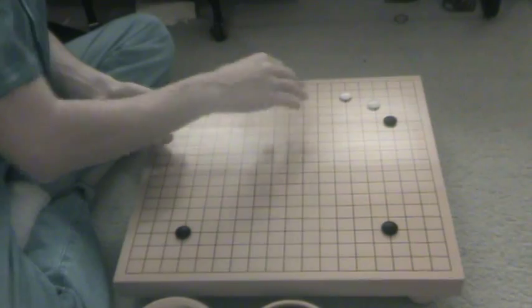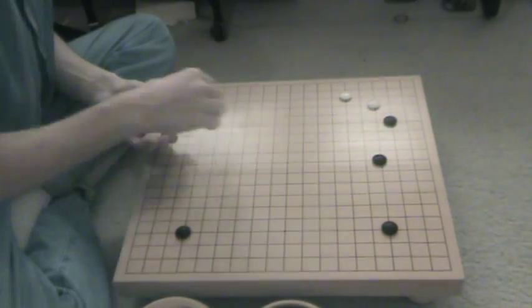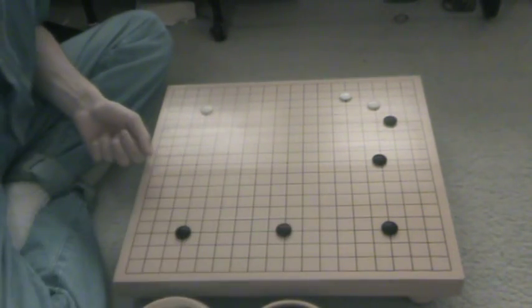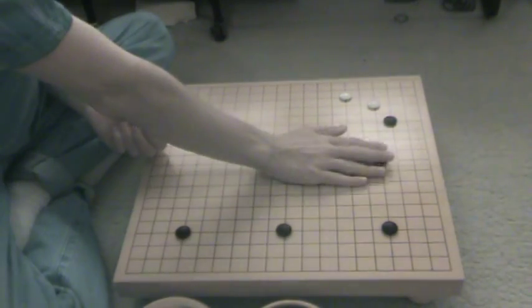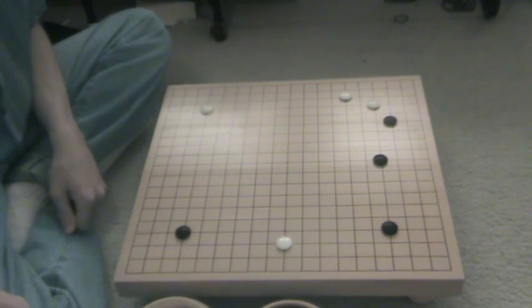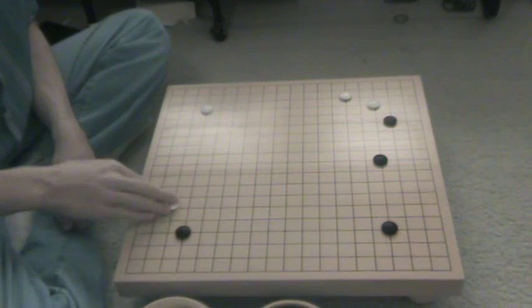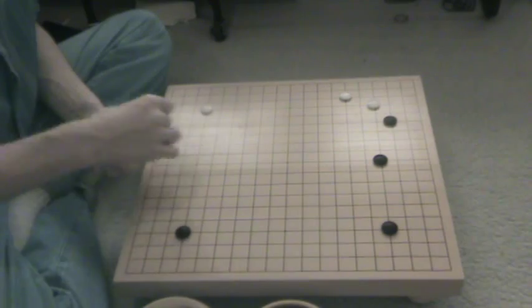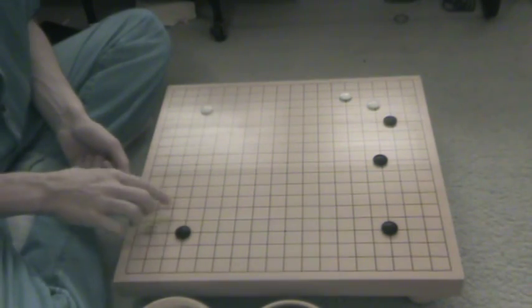Okay, so after Black gets this, then this becomes a lot even bigger because now he has his big moyo. So White might think to come in instead of approaching the open corner. So approaching the open corner, we value as big.